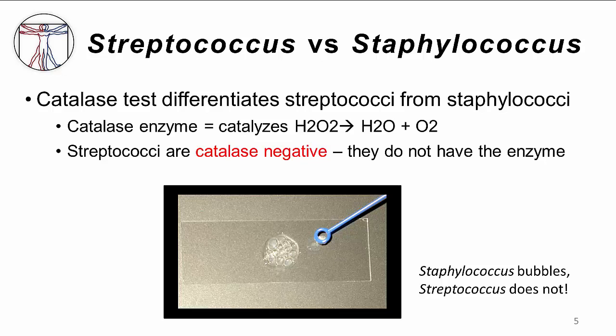Once we identify a gram positive cocci on gram stain, we can use a number of biochemical tests to further analyze the organism. Catalase is an enzyme that catalyzes the conversion of hydrogen peroxide to water and oxygen. All animals and most other living organisms contain this enzyme in their cells to protect them from the harmful effects of hydrogen peroxide and other free radicals, which are byproducts of many metabolic reactions. However, strep species are unique in that they do not possess the catalase enzyme. When a colony of staph is added to a drop of hydrogen peroxide, bubbles form vigorously as oxygen is produced because staph does contain catalase. However, if a colony of strep were instead used, no bubbles would form.